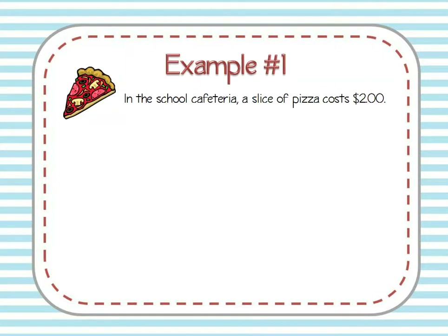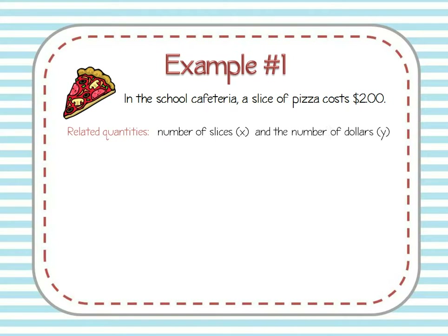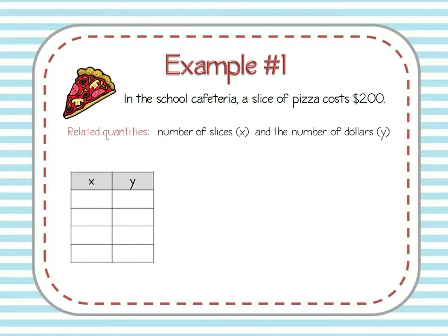Let's look at an example that might hit close to home. At this particular school cafeteria, a slice of pizza costs two dollars. So here we have two related quantities: one is the number of slices of pizza that you buy — we'll call that X — and the other quantity is the amount of money you have to pay, the number of dollars — we'll call that Y. Now we can show this relationship by setting up a table of values. If I buy zero pieces of pizza, the cost is zero dollars.